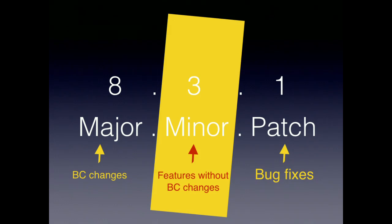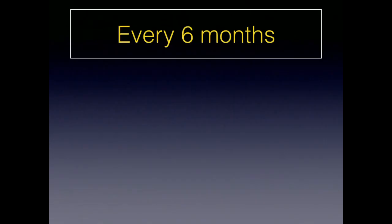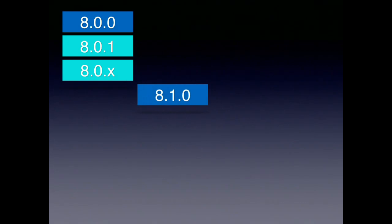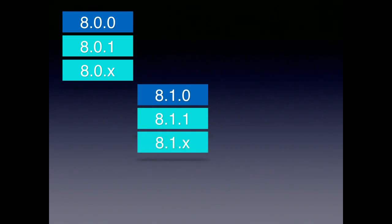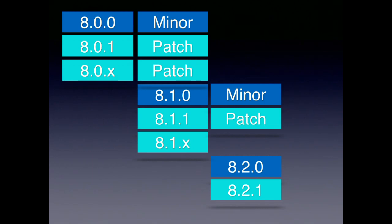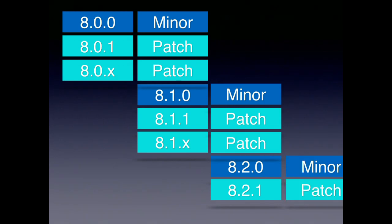Dries talked today about experimental modules — this is where, in the minor releases, you can look at the release notes and see a new module added, or modules moved from alpha to beta. Every six months we have these releases: 8.0, 8.1, 8.2, 8.3 and so on. For each minor x.0 release there's a beta and then an RC. For example, 8.3 had an alpha on February 1st, a beta 1 on February 22nd, then a release candidate, then finally 8.3.0.